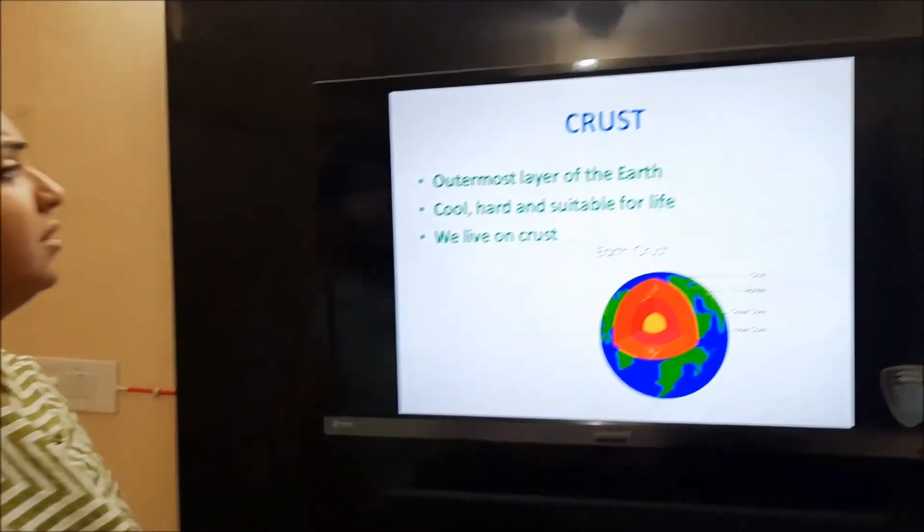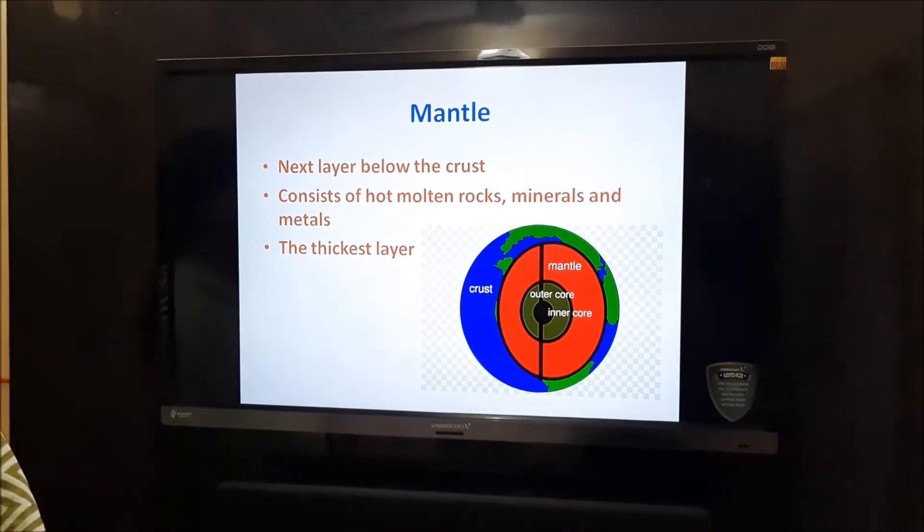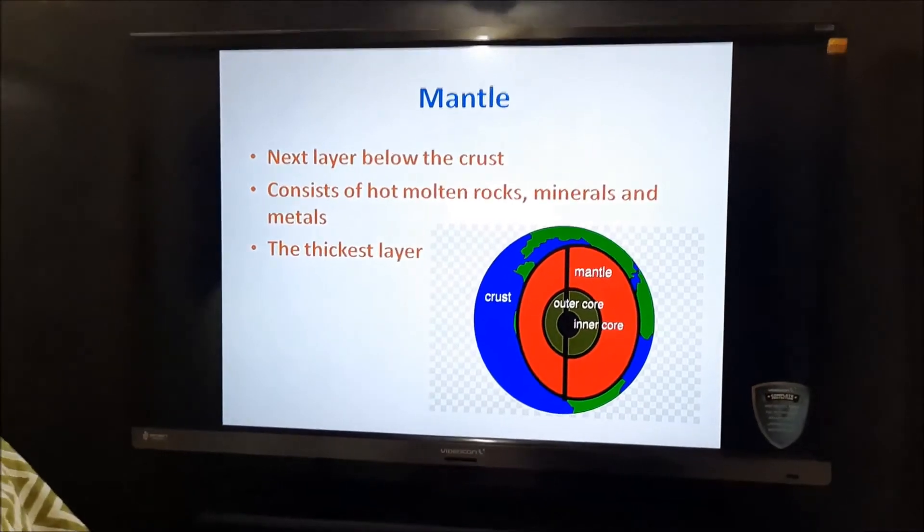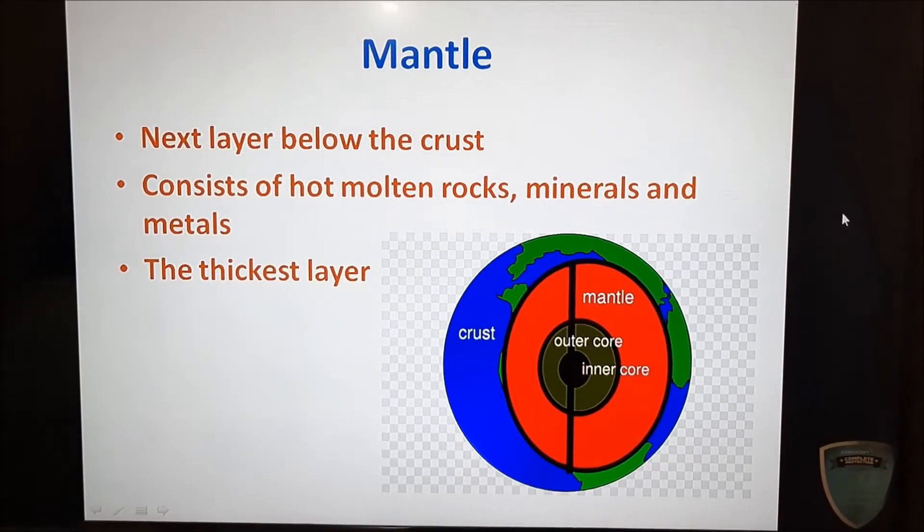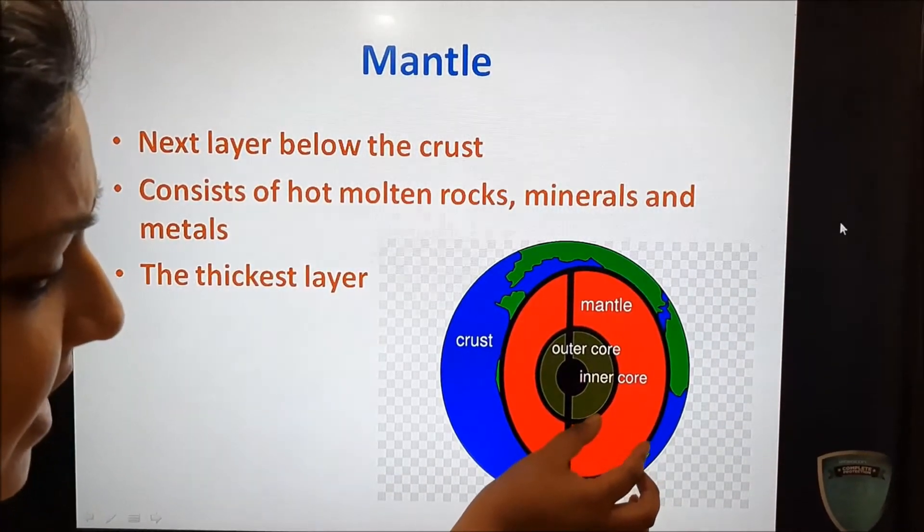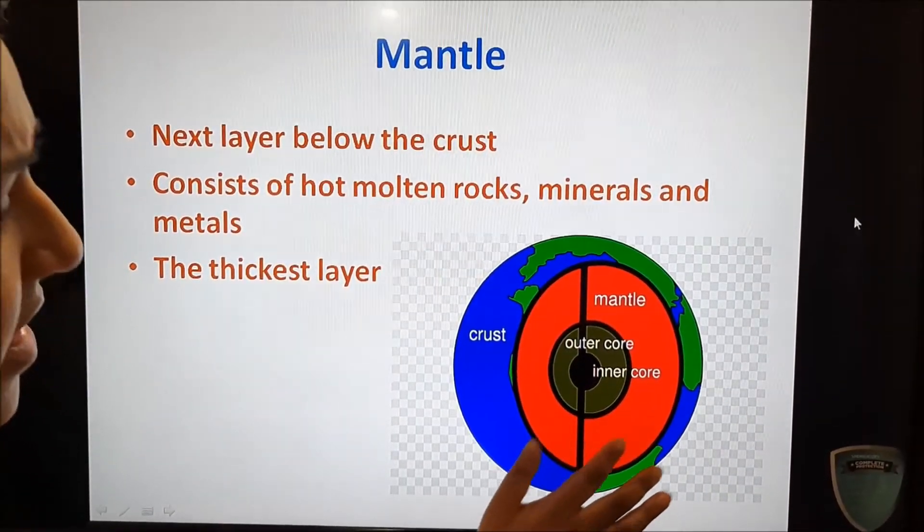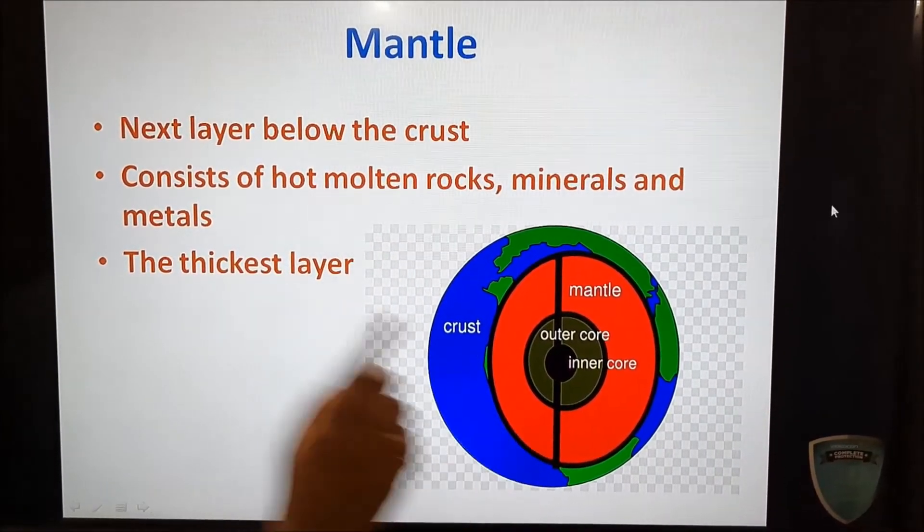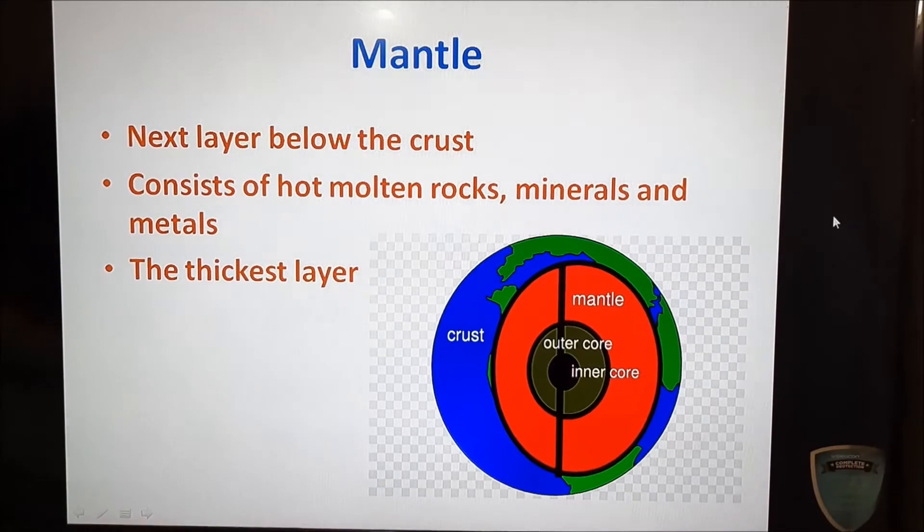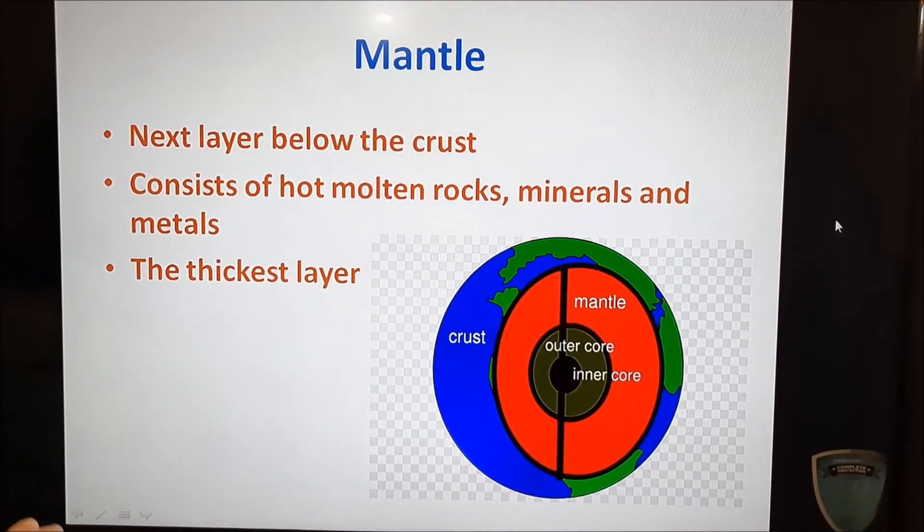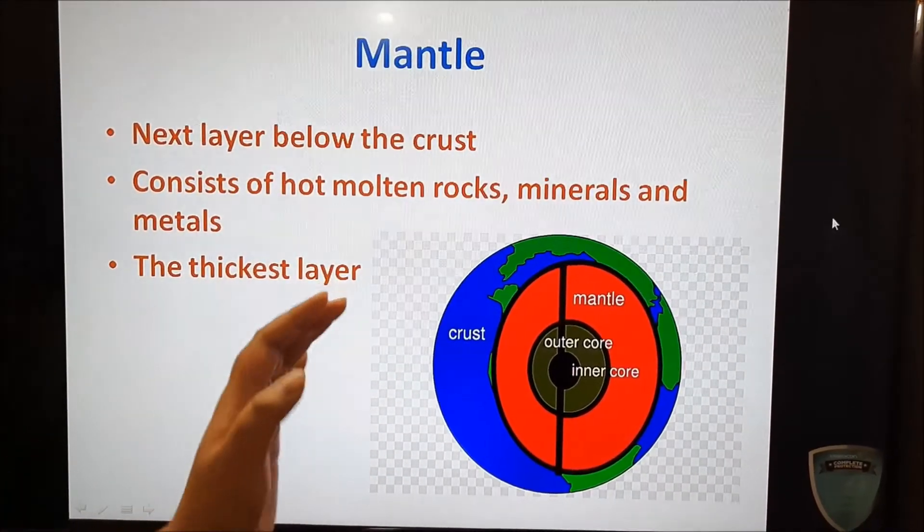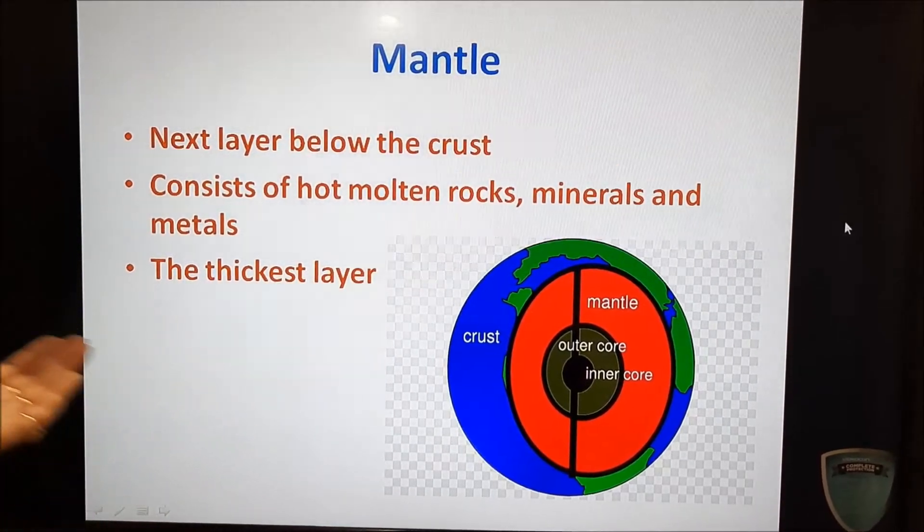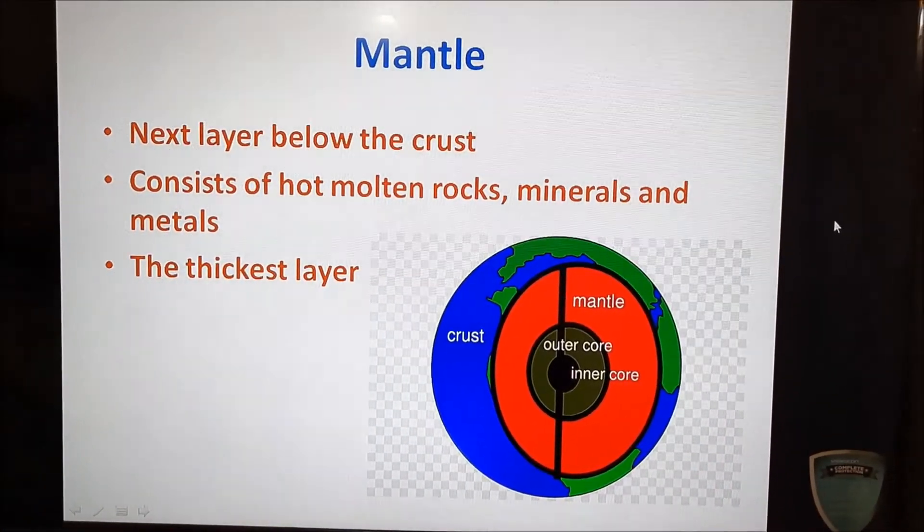Moving on to the next slide, that is mantle. This is the second layer. Now mantle is the thickest layer. As you all can see here, this is the thickest layer of the planet Earth. Also it consists of hot molten rocks, minerals and metals.